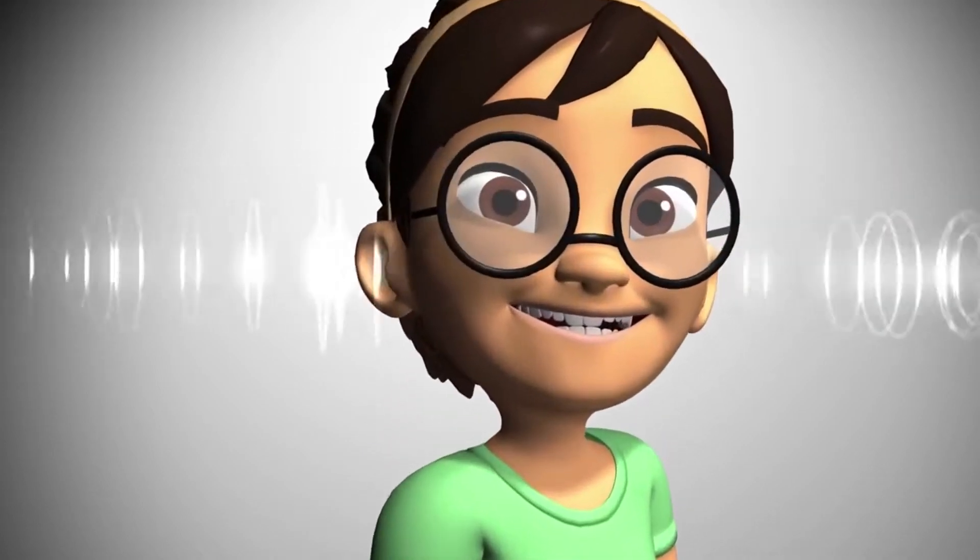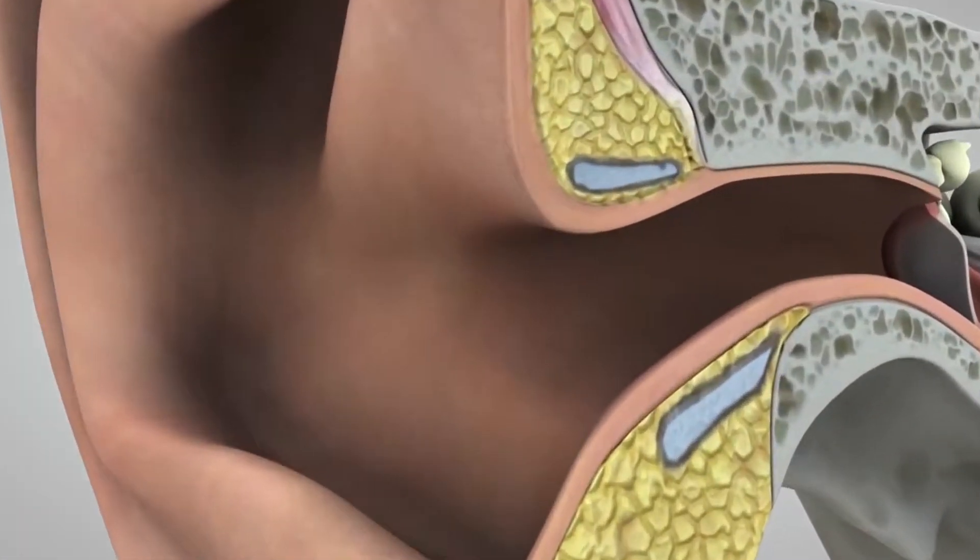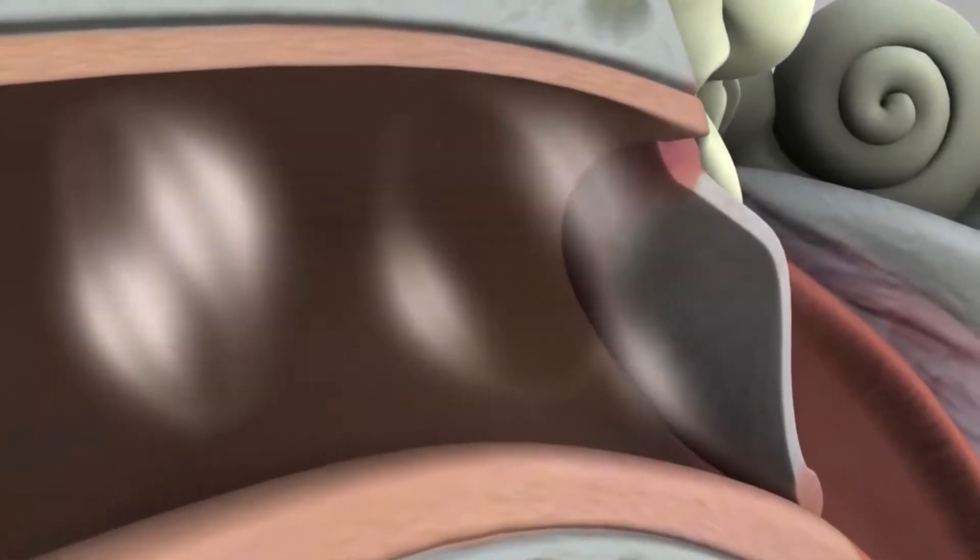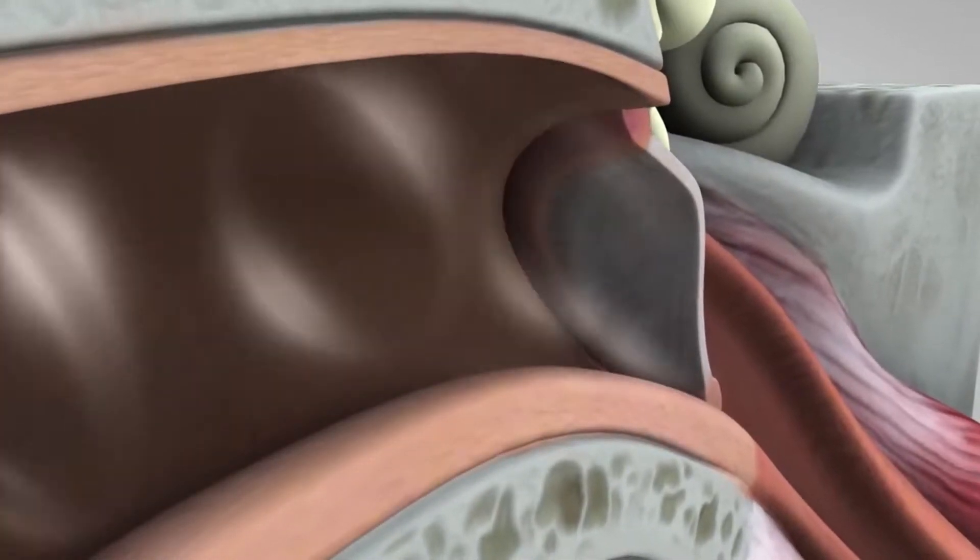The outer ear catches the waves, which then travel through a narrow passageway called the ear canal. The sound waves reach the eardrum, which is a membrane roughly half the size of a dime. They make the eardrum vibrate.